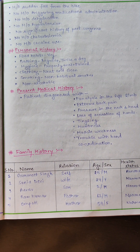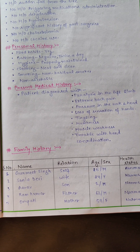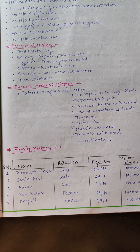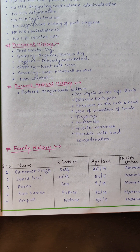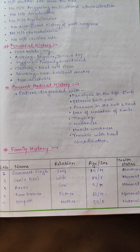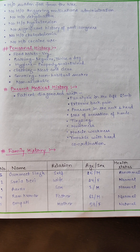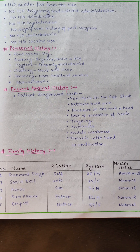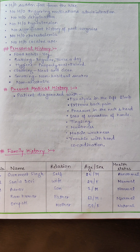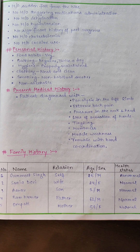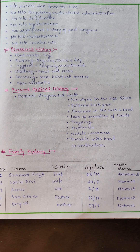Personal history includes food habits, bathing, hygiene — whether properly maintained or not — clothing, smoking status, and alcohol use. Present medical history: the patient had paralysis in the left limb, extreme back pain, pressure in the neck and head, loss of sensation in the hands, tingling sensation, numbness, muscle weakness, and trouble during hand coordination.